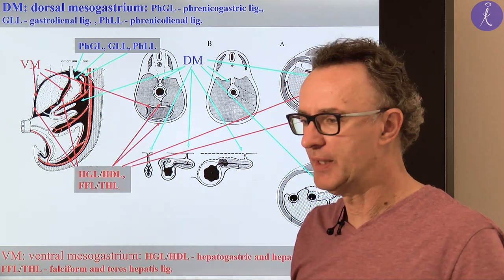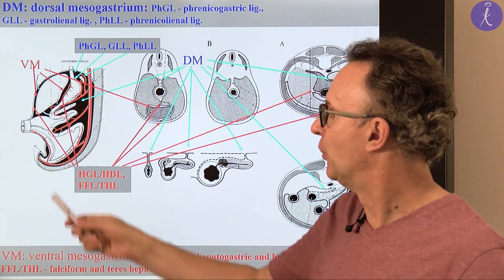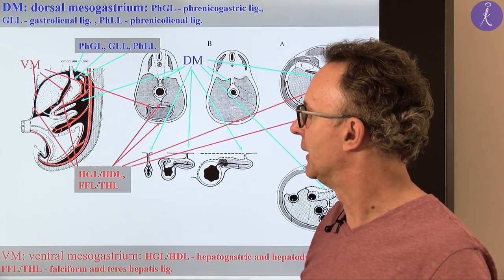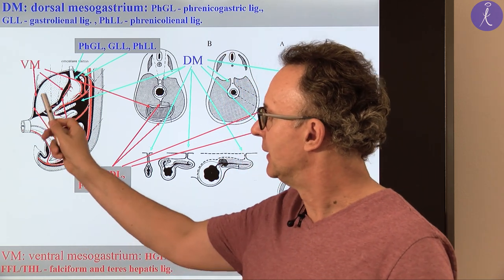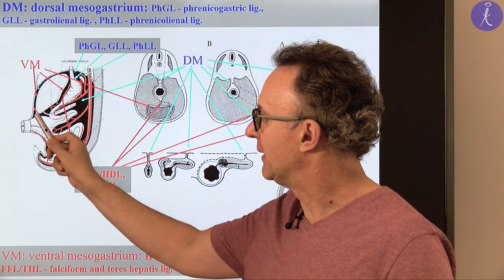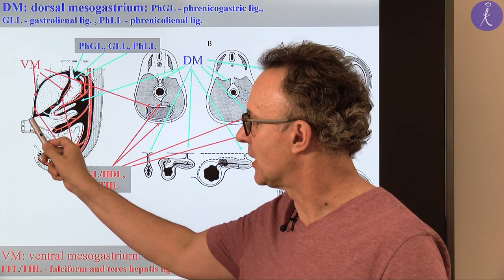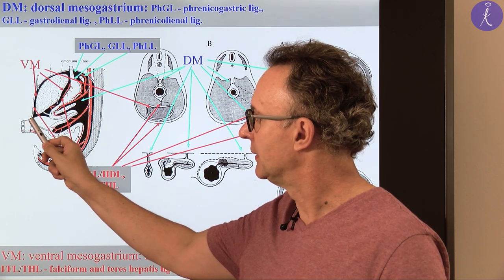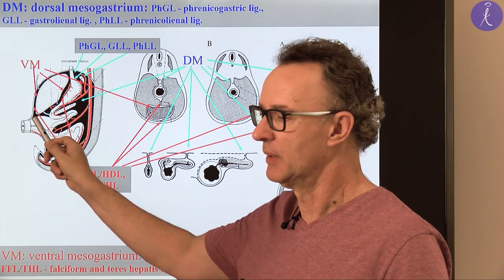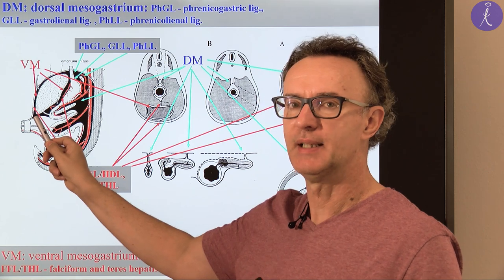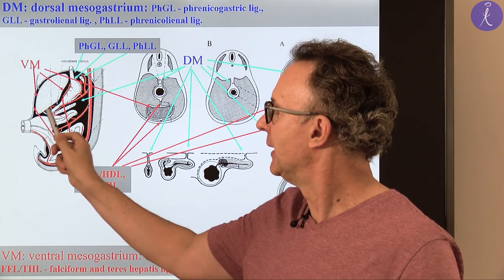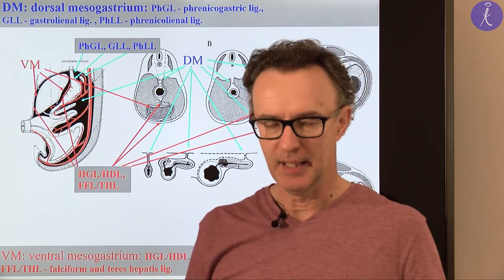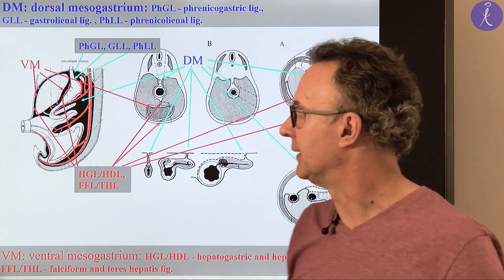This can be a nice question on the exam: where is the termination of the ventral mesogastrium in the body? The falciform ligament terminates in the round ligament of the liver — the ligamentum teres hepatis. And the lesser omentum terminates in the hepatoduodenal ligament.